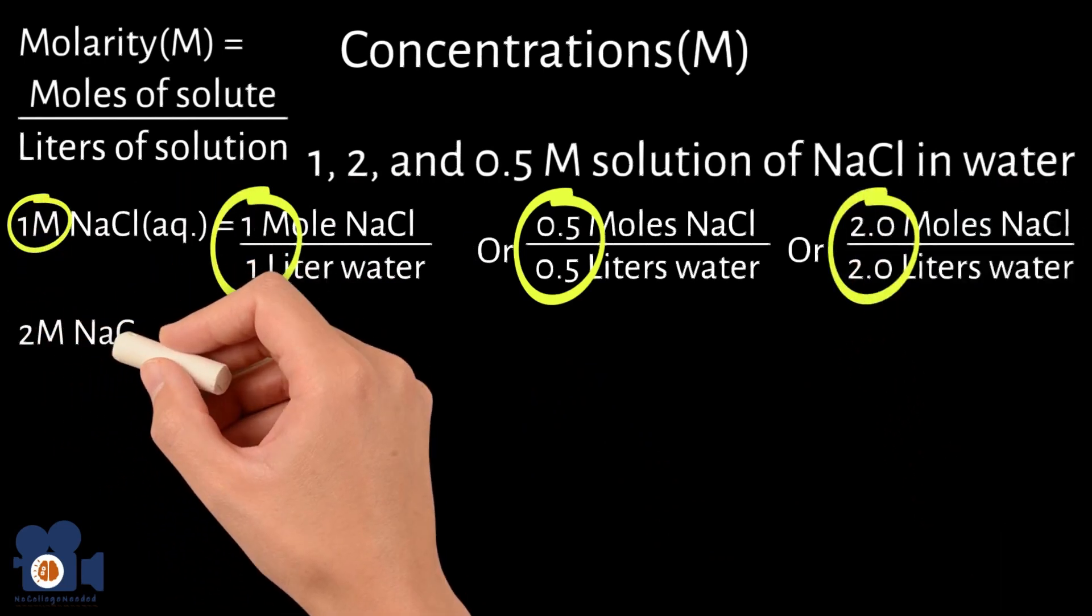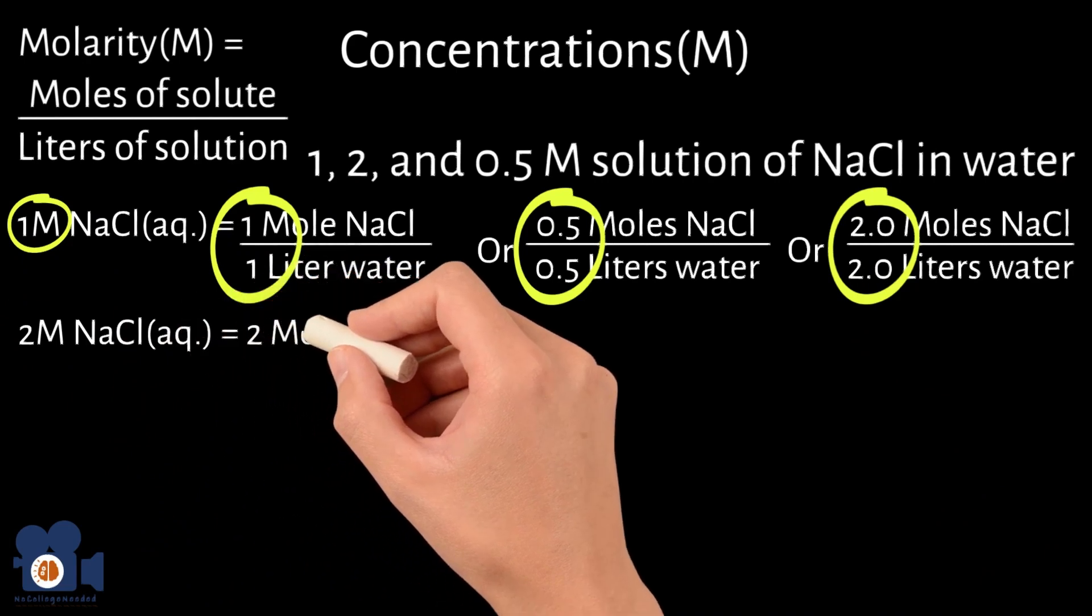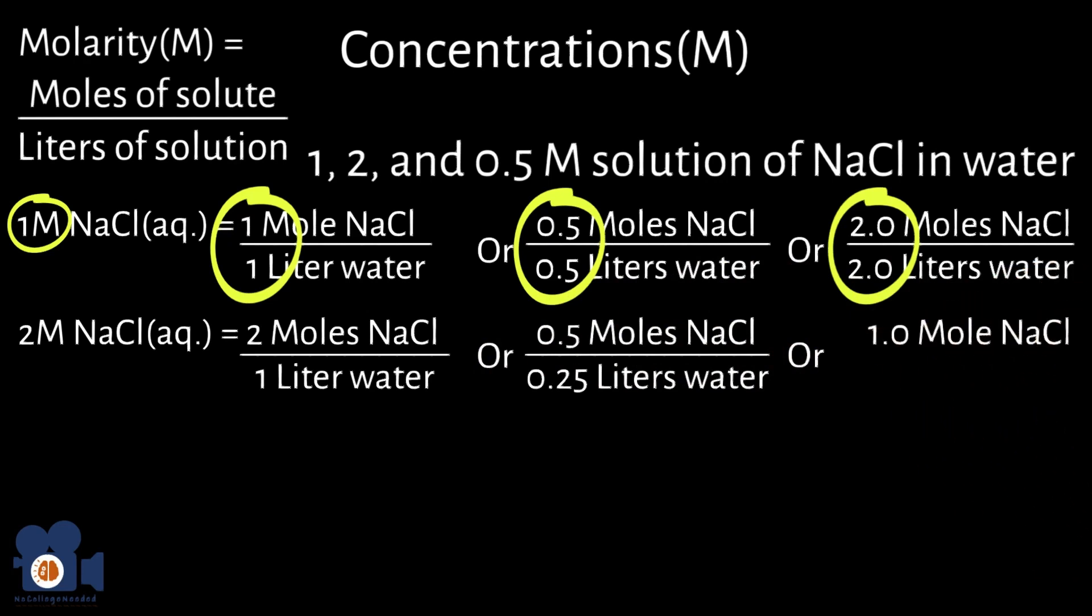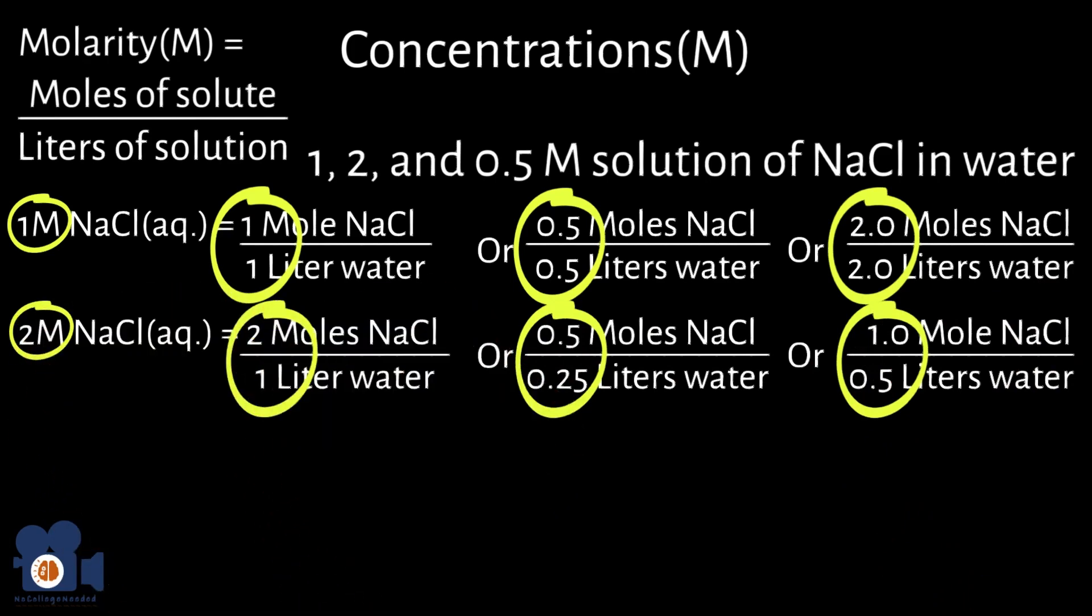Conversely, a two molar solution of sodium chloride in water would have two moles of NaCl per one liter of water. This could be either with 0.5 moles of NaCl in 0.25 liters of water, one mole of NaCl in 0.5 liters of water, or two moles of NaCl in one liter of water. If you look at the math, the division all comes out to be two: 0.5 divided by 0.25 equals two, one divided by 0.5 equals two, and two divided by one equals two.